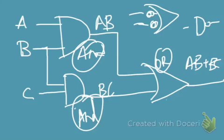Looking at the circuit, to convert the top AND gate into a NAND gate, I add a bubble at its output. But if I add a bubble, I must also add an inverter on that wire so that the signal on that line remains AB and does not change to AB-bar. I apply the same logic to the bottom AND gate — add a bubble and add an inverter in the line so the output stays BC.